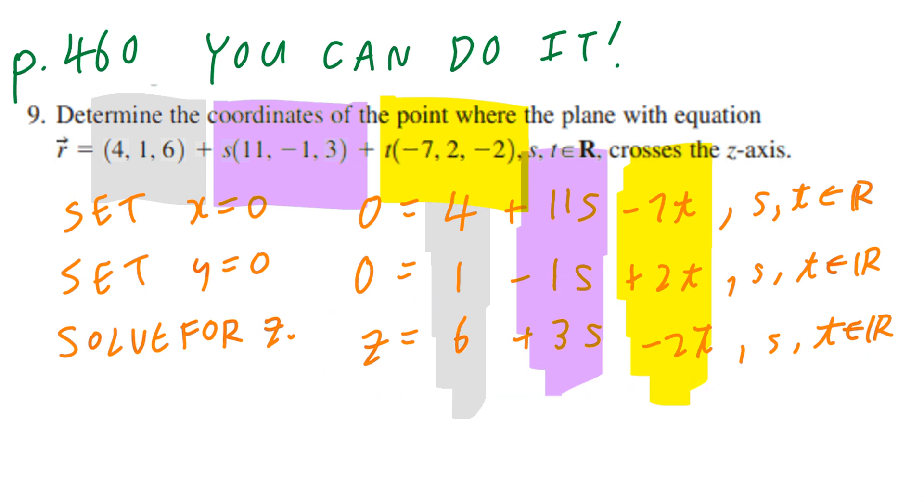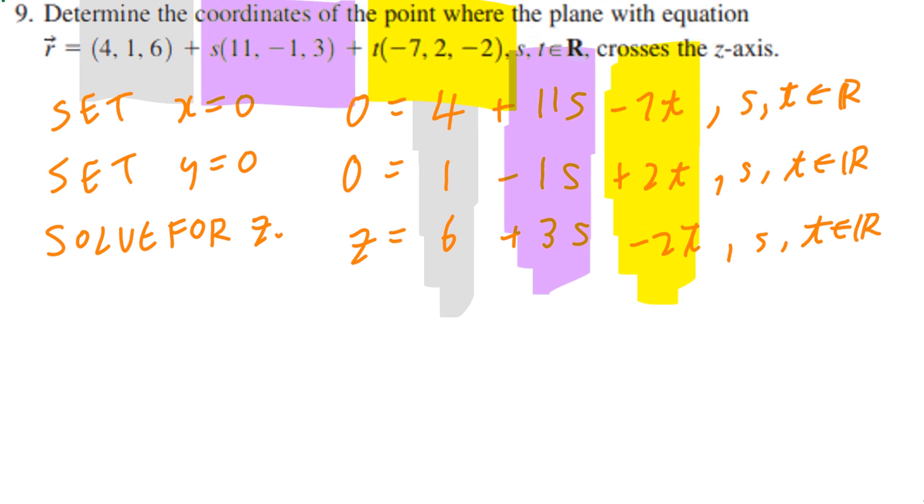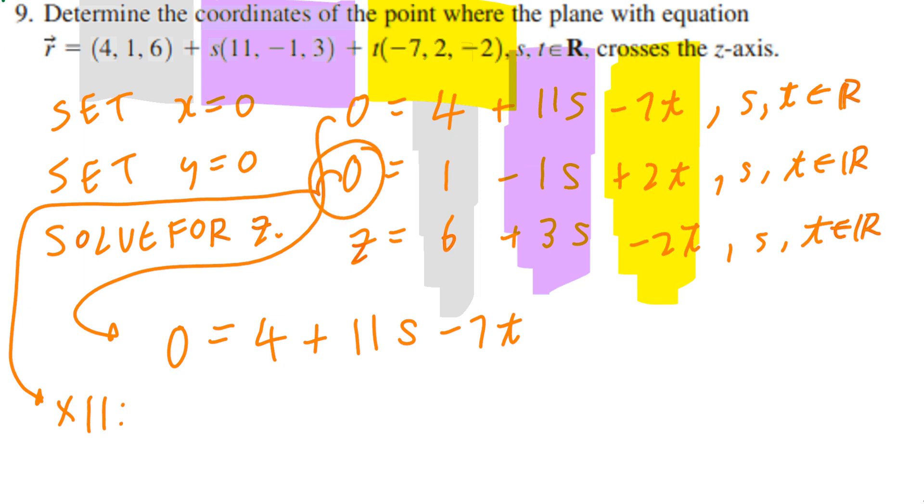Now this goes back to grade 10 academic math, and you can solve by elimination or substitution. So I'm saying that 0 equals 4 plus 11s minus 7t. If I look at this second line, what I can do is multiply everything by 11. So 0 times 11 is 0, 1 times 11 is 11, negative 1s times 11 is negative 11s, and 2t times 11 is 22t.